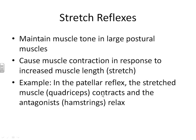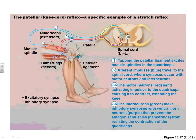In the patellar reflex, the quadricep contracts while the antagonistic muscle, the hamstring, relaxes. If I'm sitting with my legs dangling and someone activates the sensory receptor in my tendon, that activates the stretch of the quadricep. The stretch receptor sends a signal through the sensory neuron, it integrates at the interneuron, and then sends signals out through motor neurons to the effectors. This causes contraction of the quadricep and relaxation of the hamstring. So as someone hits your knee, your leg comes up because the quadricep is contracting and the hamstring is relaxing.